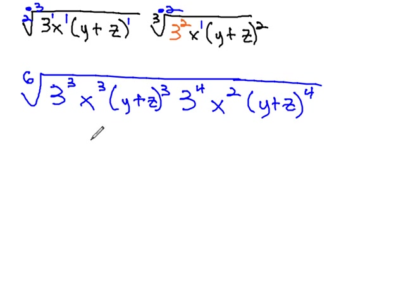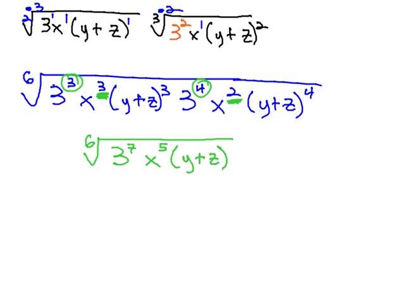And now that everything is under the same sixth root, we can combine pieces together by adding the exponents. How many total 3's do we have? 3 plus 4 is 7. How many total x's do we have? 3 plus 2 is 5. And how many y plus z factors do we have? 3 plus 4 is 7.